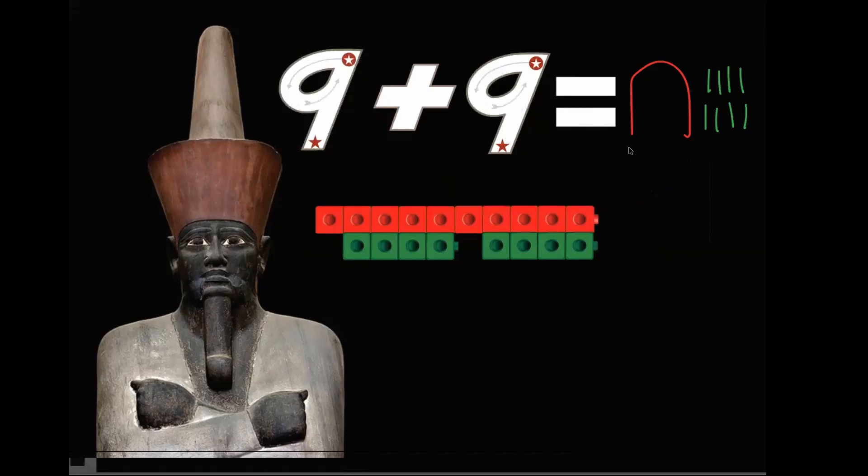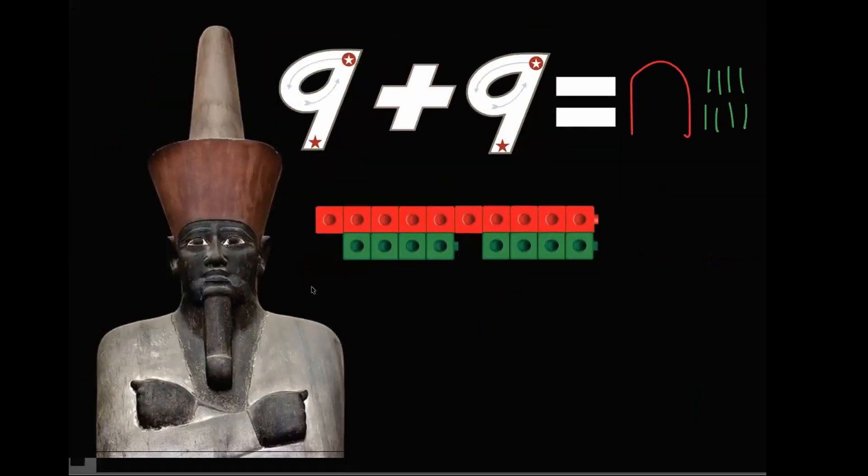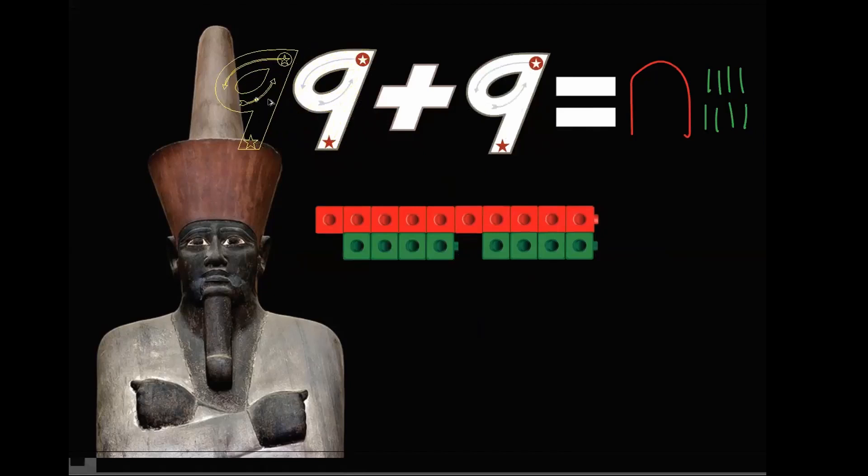So we have eight green counting toys. So how many counting toys do we have all together? How many all together? Eighteen. How would we say that in African numbers? Ten, eight. Very good. Ten, eight. Ten-eight is correct. This is too easy for you all. I have to give you all something more challenging.